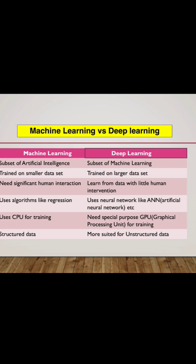Machine learning gets trained on a smaller dataset compared to deep learning, which needs a larger dataset. That is why, as seen in point number five, a simple CPU — used in our computers — is sufficient for machine learning, whereas deep learning requires specialized processing units called GPUs (graphical processing units). GPUs have highly specialized processing capabilities designed for complex algorithms to process at faster speeds.